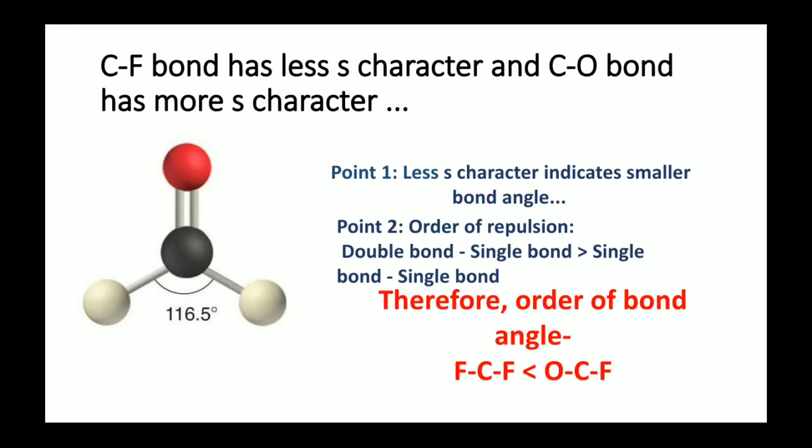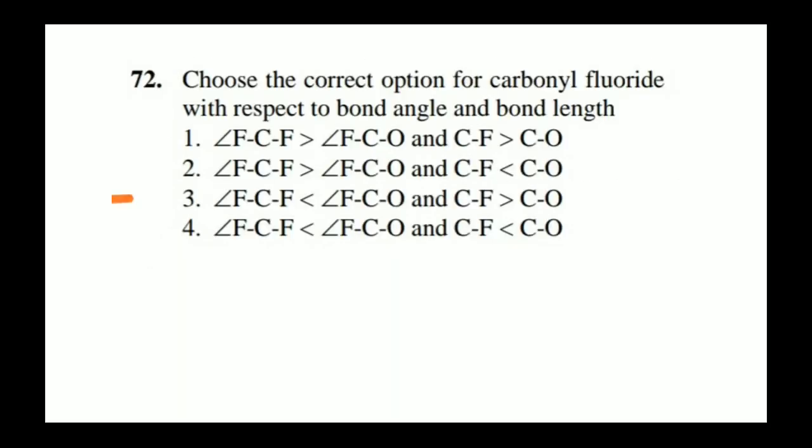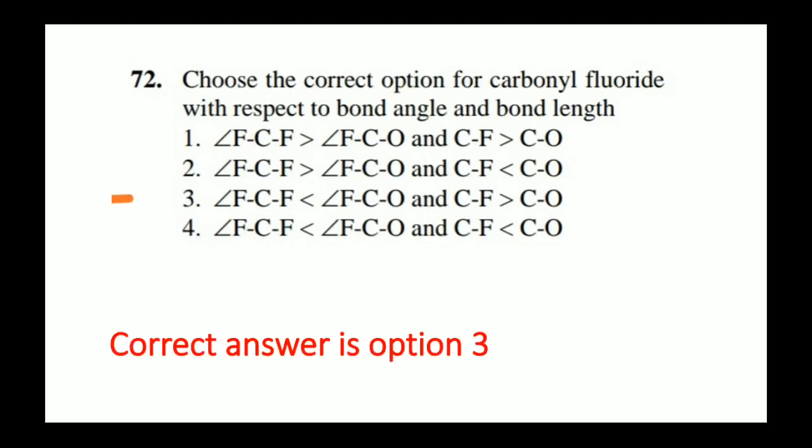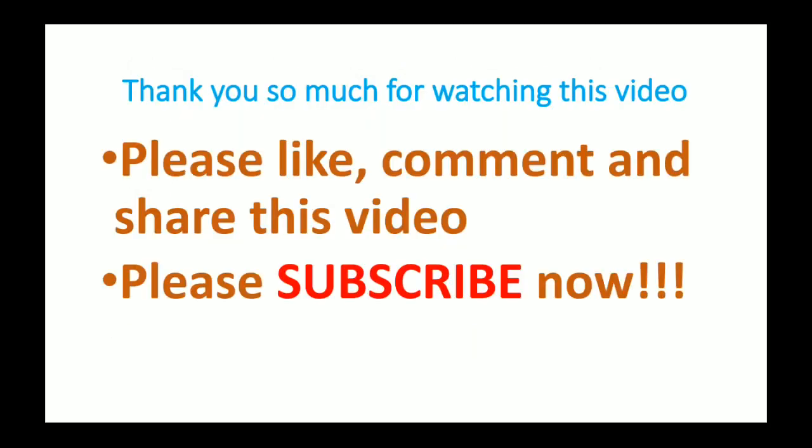So the correct answer for the CF₂O question is option 3, which shows that the F–C–F bond angle is less than the F–C–O bond angle, and the C–F bond length is greater than the C=O bond length. I hope you understood Bent's Rule and its applications. Thank you for watching — please like, comment, and subscribe to this YouTube channel and press the bell icon.